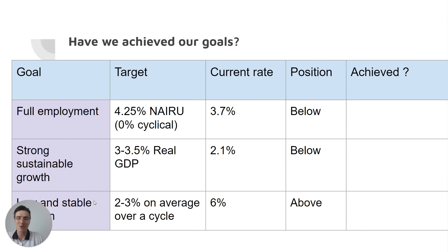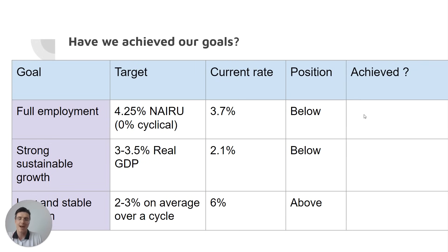By now you should know your three macroeconomic goals. You should know their measurements: NIRU, real GDP, and the inflation rate. Once you know that, you compare that to the current rate of unemployment, which is 3.7% — so below neutral.